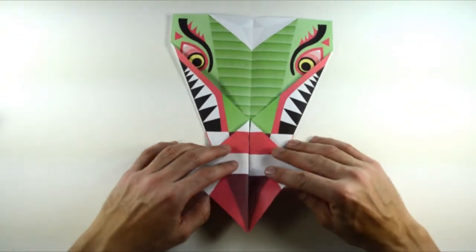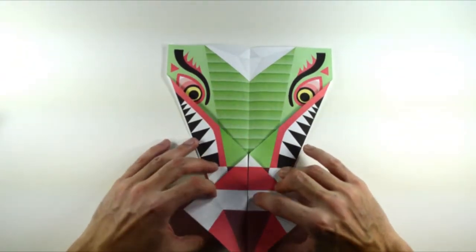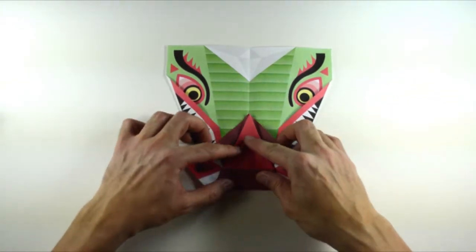Now, to form the nose, we do a series of three folds. First, we fold up at the narrowest point.